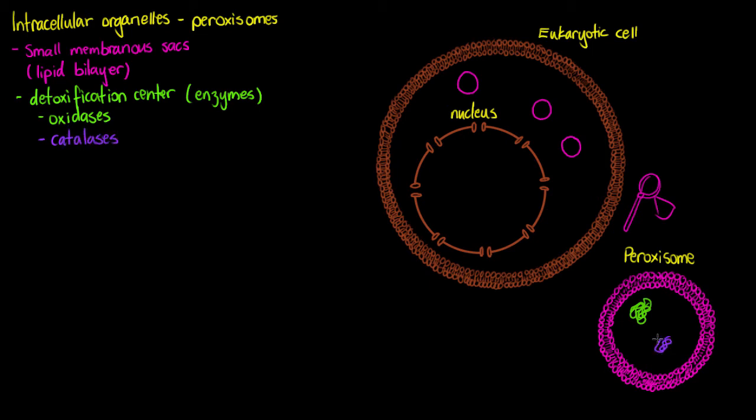We have our oxidase and catalase here within the peroxisome and something our catalase is going to be doing is detoxifying things like alcohol and formaldehyde through the use of hydrogen peroxide. But we need to get that hydrogen peroxide from somewhere so let's have a bit of a talk about that.